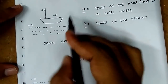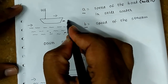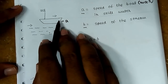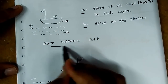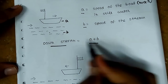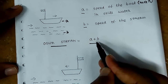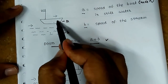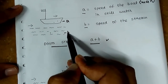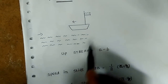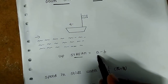And B is speed of the stream. So, boat or man in still water is A. Downstream — so two directions will be downstream, energy will be plus. Downstream will be A plus B. Upstream will be energy minus, like A minus B.